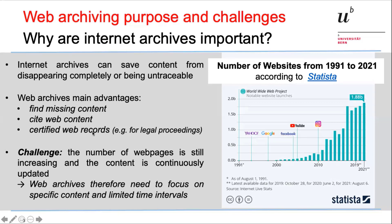The main advantages of web archives are: first, finding missing content. Second, you can use them to cite web content — if you refer to a URL, by the time people read your paper the web page may have disappeared or changed, so it is very useful to include a web archive link in citations. Third, an important function is providing certified records — if you need to prove that at a given time specific content was on a specific web page, for example for legal proceedings, web archives can give you certified proof.